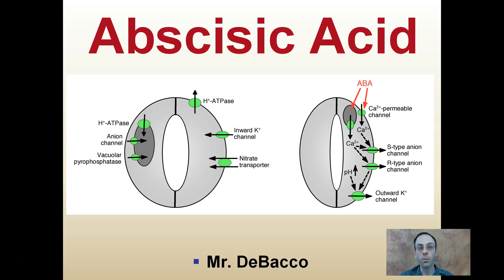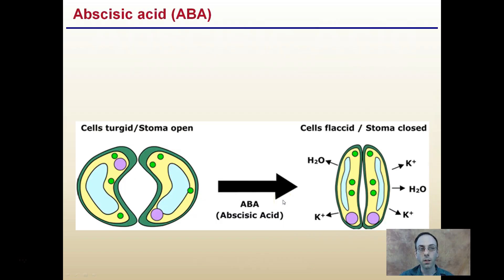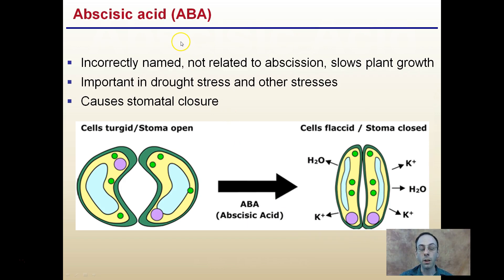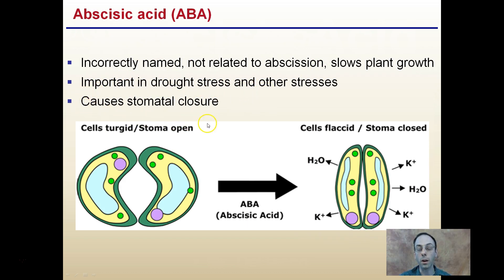Here I'm going to provide a brief overview of the plant hormone abscisic acid. Now, what is pictured here is an open and a closed stomata, and it's involved in this process. Abscisic acid, typically abbreviated ABA, is kind of incorrectly named because it's not related to abscission. It slows plant growth. Please don't confuse it with abscission because it is not involved in that. It's important in drought stress and other stresses, and particularly important because it causes the stomata to close.